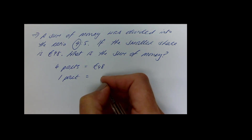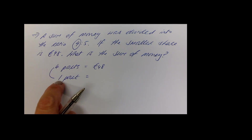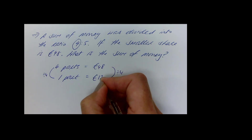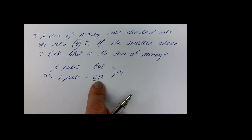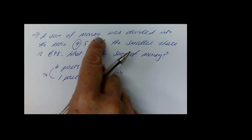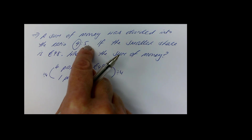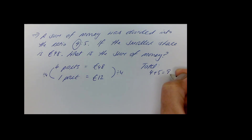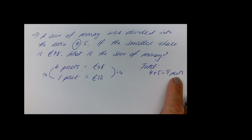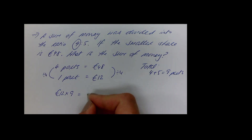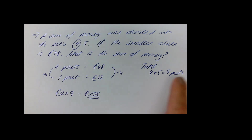Since 4 parts equals 48 euros, divide both sides by 4: one part equals 12 euros. Now to find the total sum of money, we need all parts — 4 + 5 = 9 parts. So the total money is 12 × 9 = 108 euros.